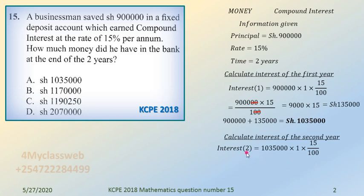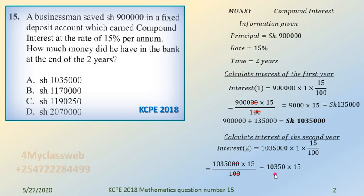For the second year, you take the new principal — which includes the original principal plus the first year's interest — giving you 1,035,000 shillings, multiplied by one more year, times the rate of 15 over 100. Deal with the zeros as usual, and you are left with 10,350 multiplied by 15, which gives you the interest for the second year: 155,250 shillings.